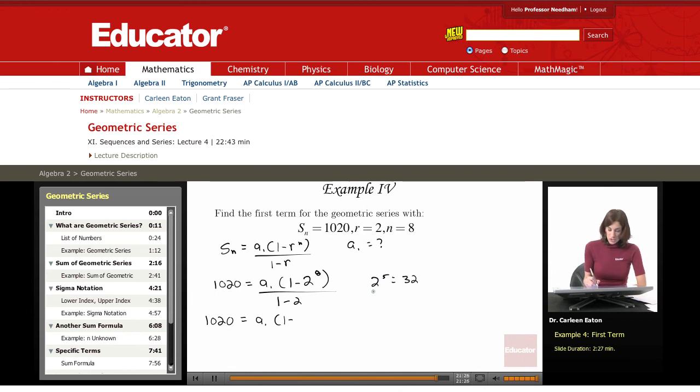Then we're going to get 2 to the 6th is 64, 2 to the 7th is 128, and then 2 to the 8th is 256. So that's 1 minus 256 divided by 1 minus 2 is negative 1.